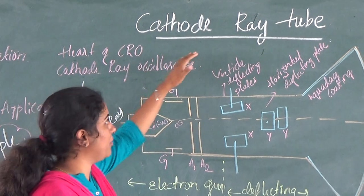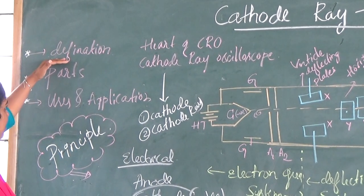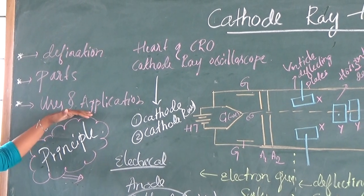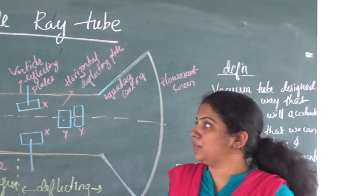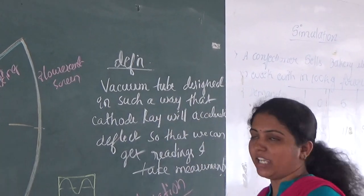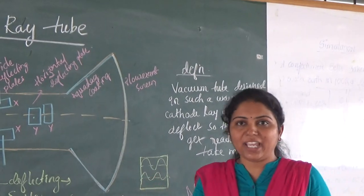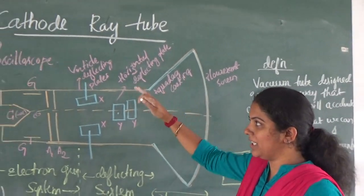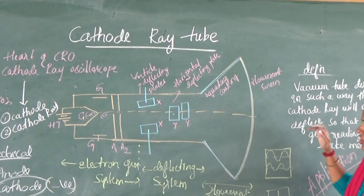First, what is this cathode ray tube? It is a vacuum tube designed in such a way that the cathode ray will accelerate and deflect, so that we can make many measurements. Using this cathode ray tube — in terms of the cathode ray oscilloscope — we can make many measurements.